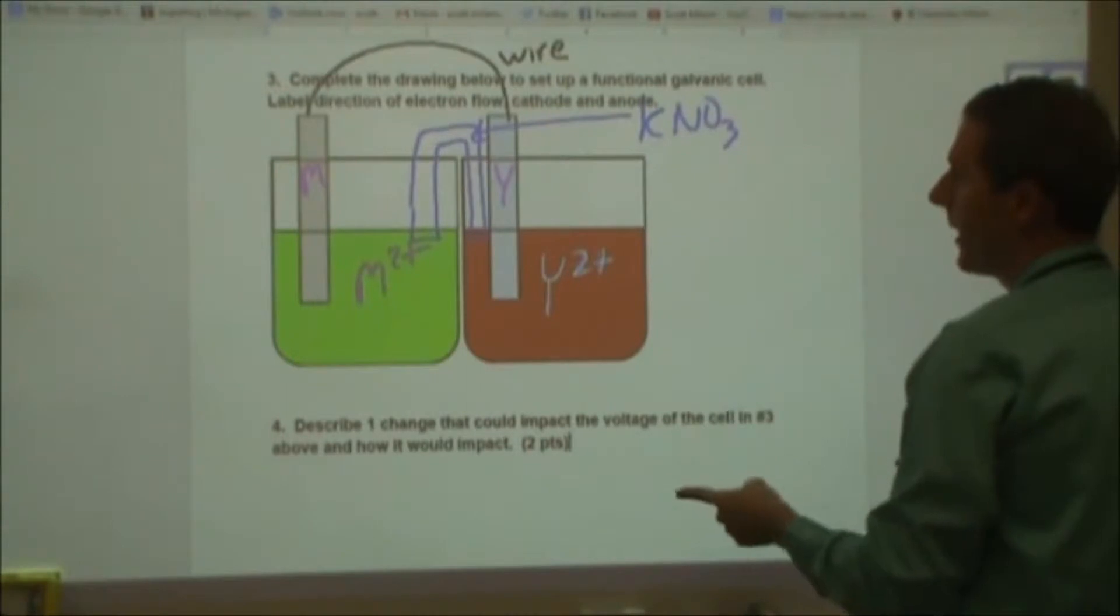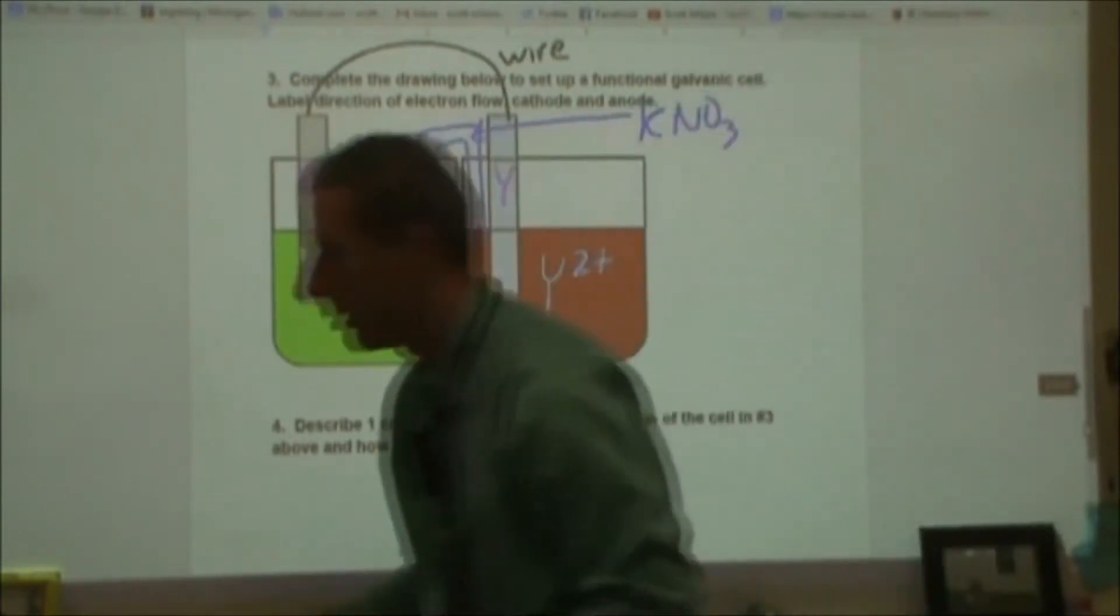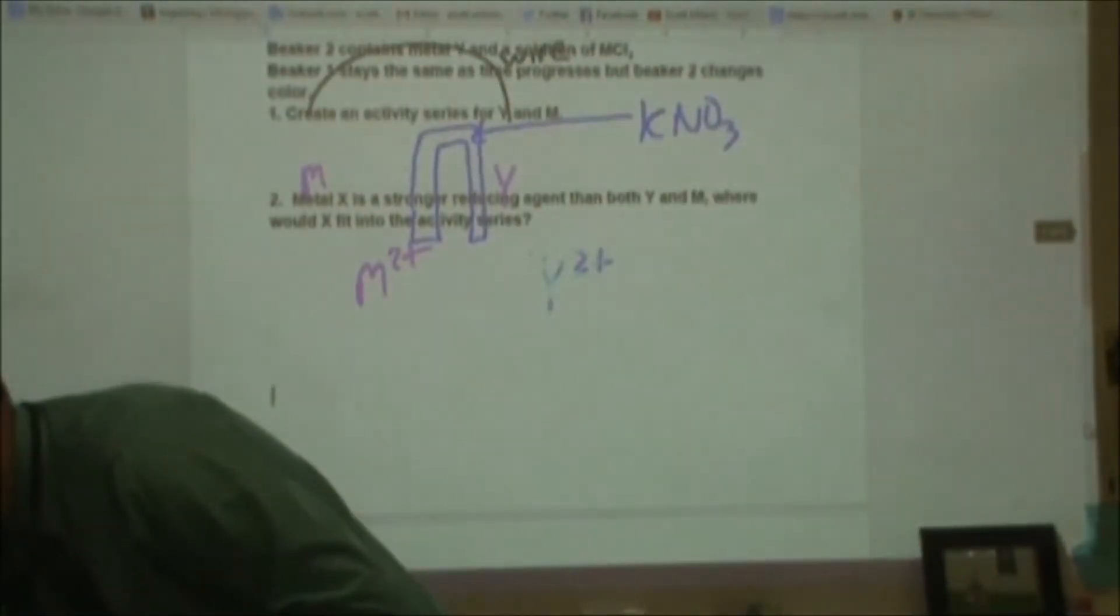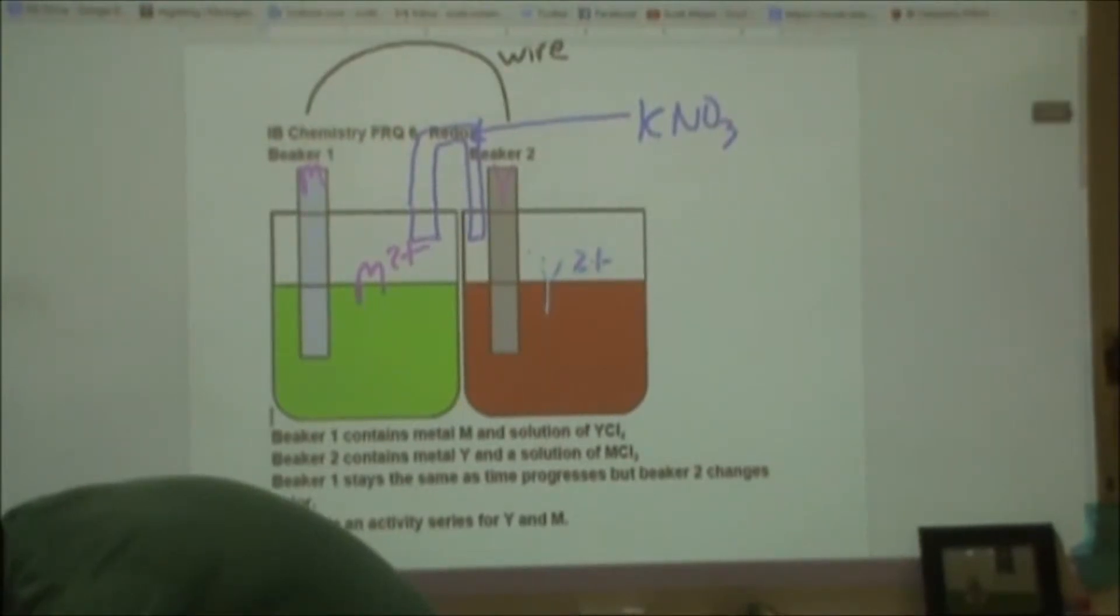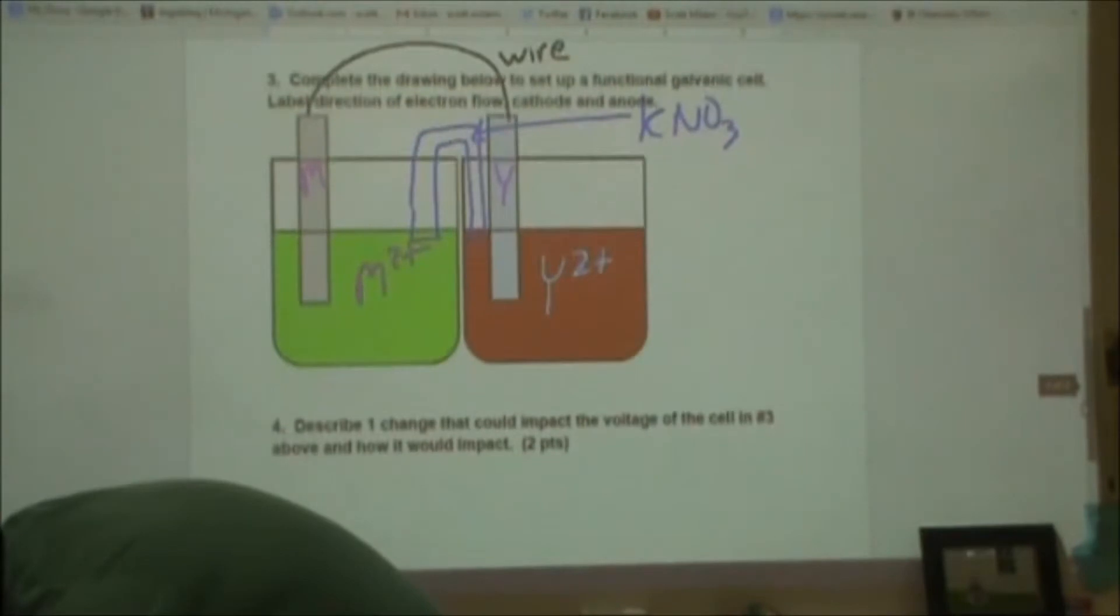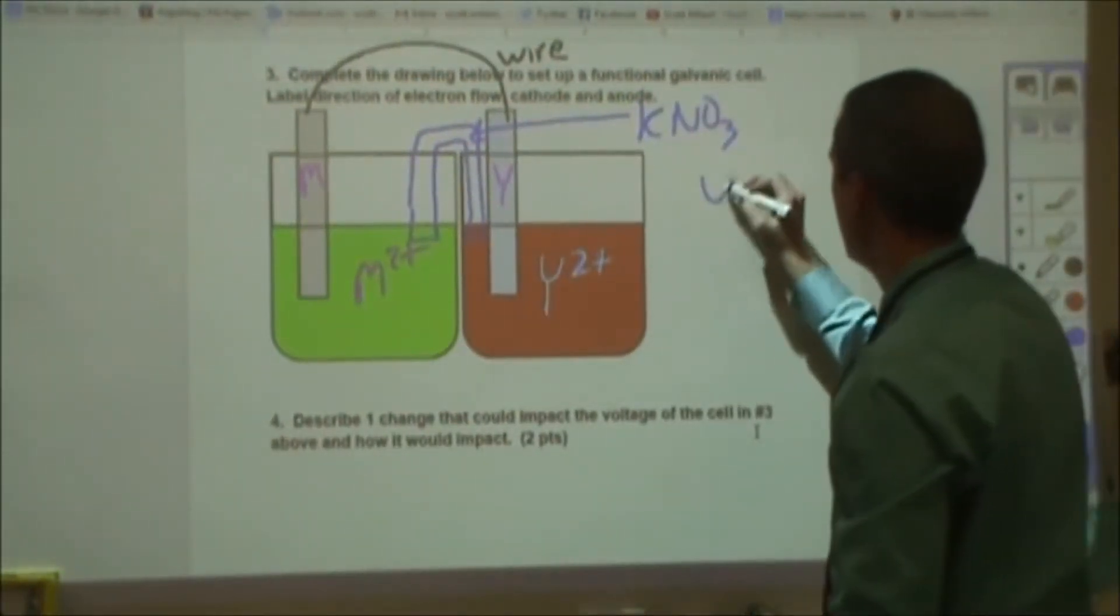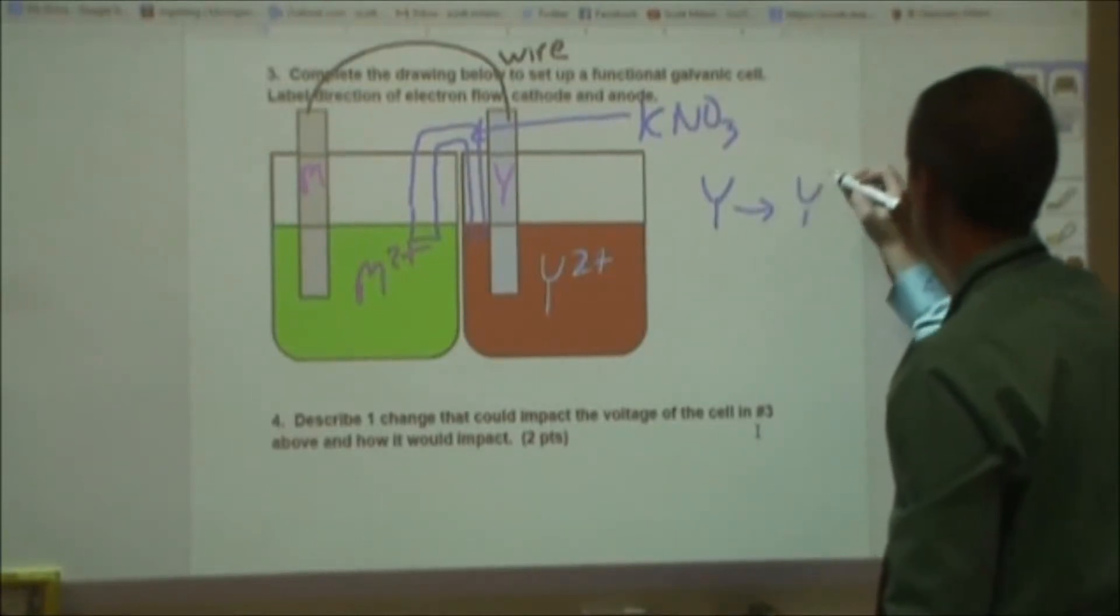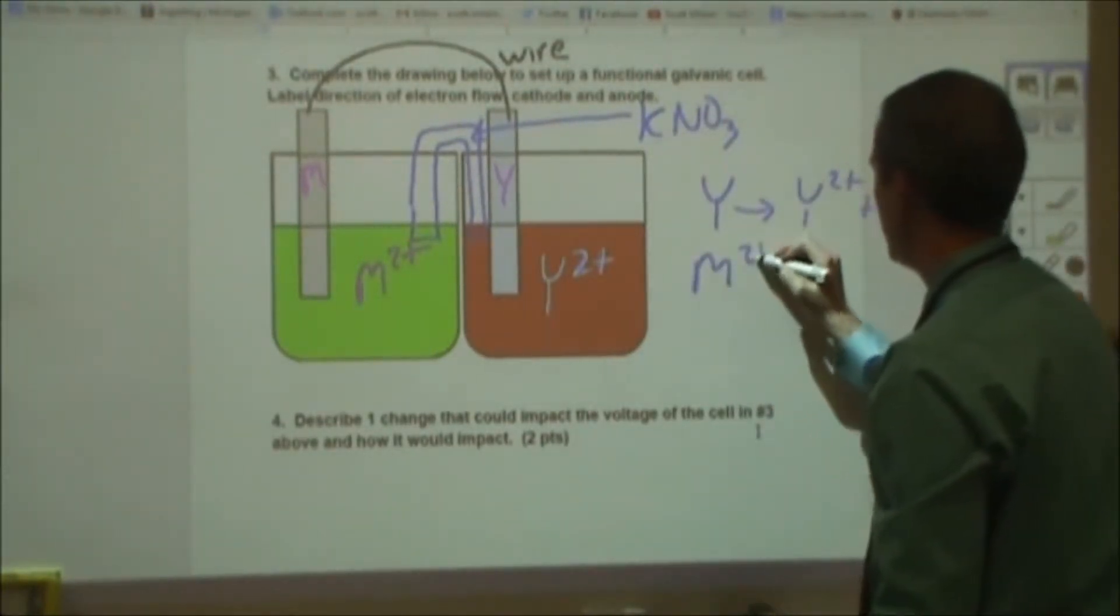It says label the direction of electron flow cathode and anode. So for that, we kind of have to go back to what happened up above for this particular reaction. So if we go back and look, we had that beaker 1 didn't do anything with the metal M. And beaker 2, where it had the metal as Y, did react. So the reaction that happened was Y turned into Y2+, and then the M2+ became metal M.